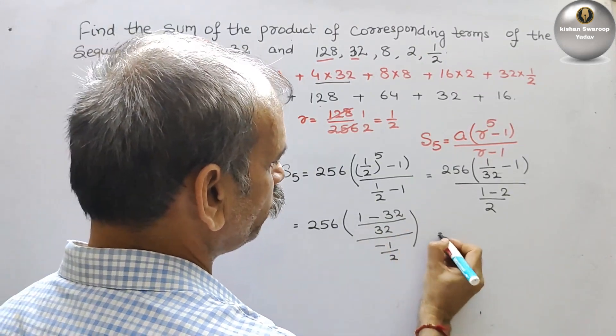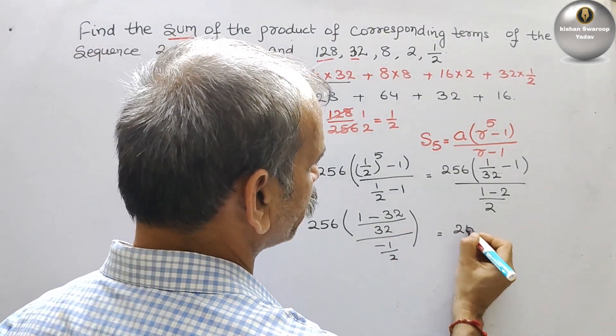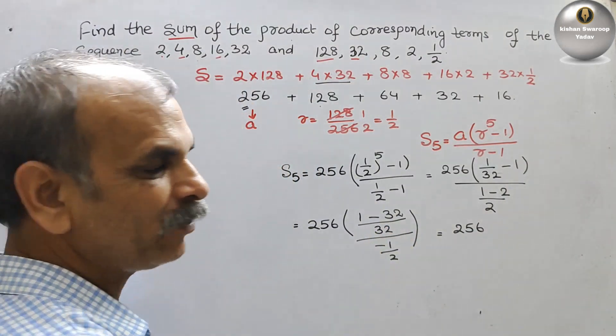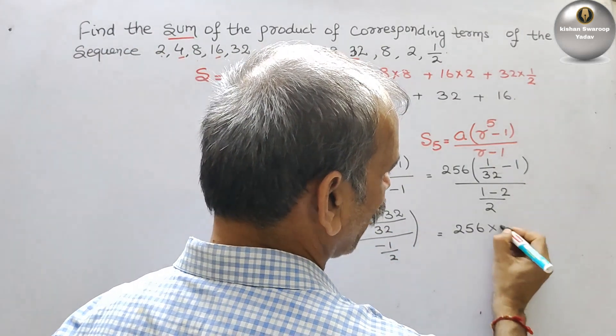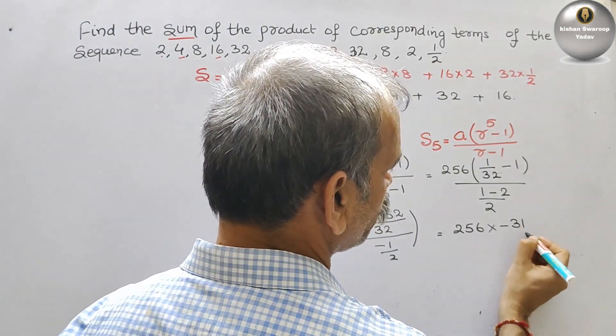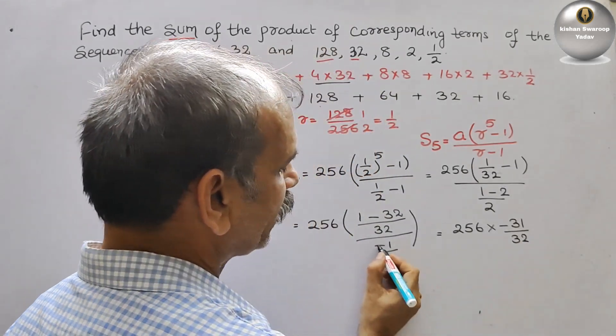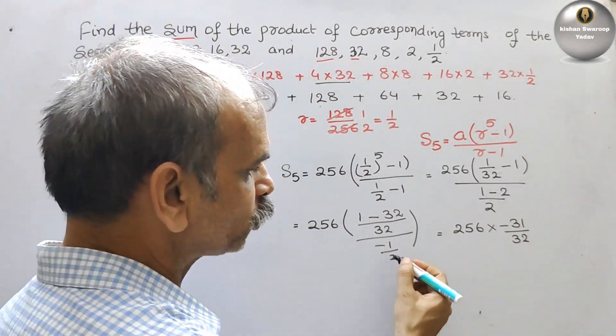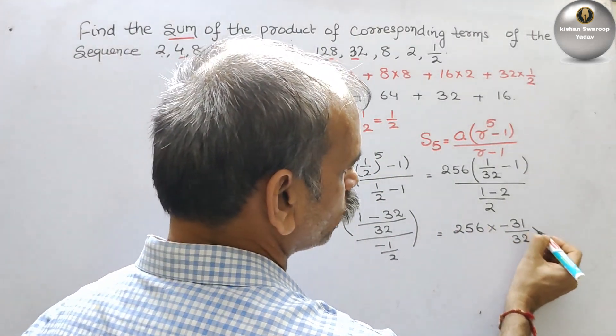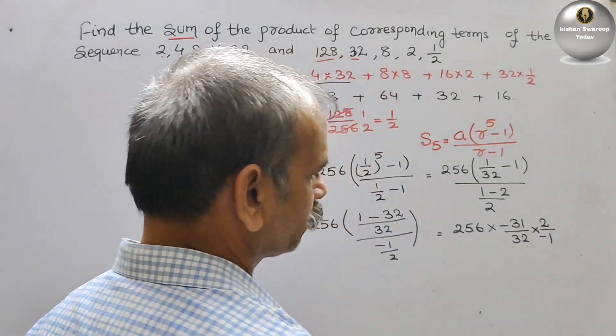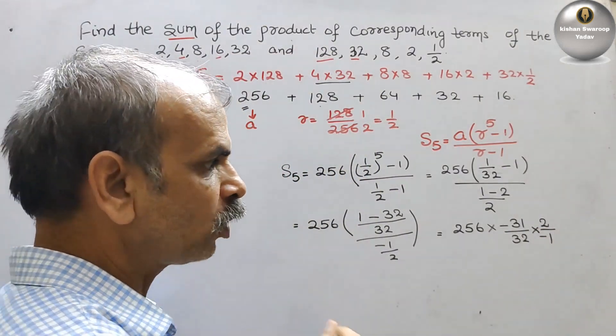This equals 256×(-31/32). When we divide by -1/2, the 2 will come up. So it will be 2 divided by -1. Now solve this.